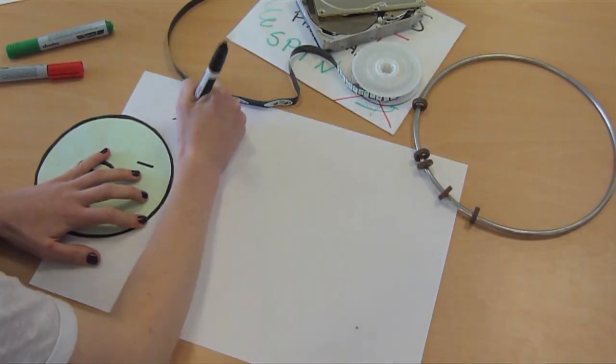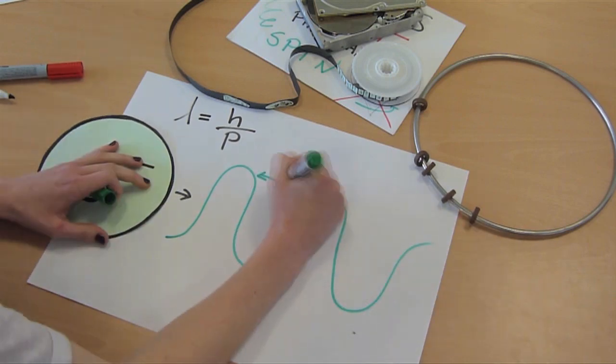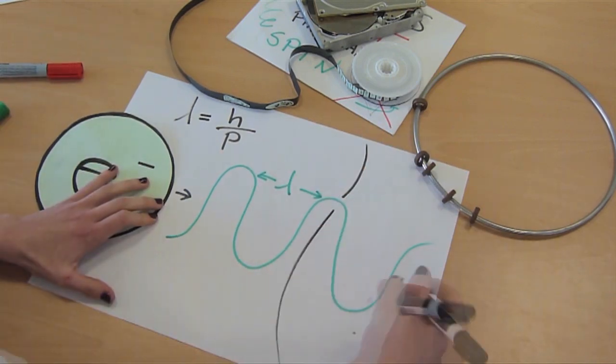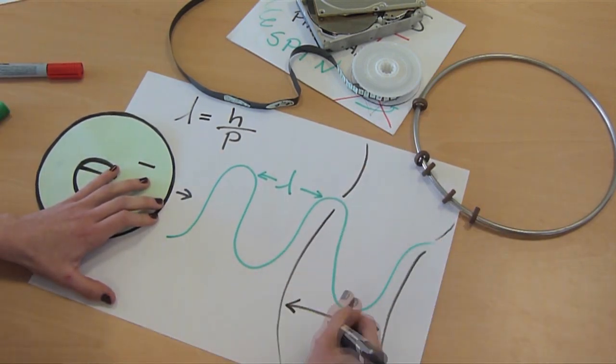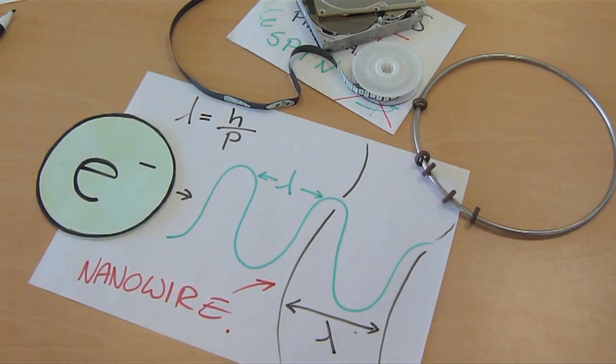A nanowire, in that sense, is defined relative to the wavelength of the charges or the electrons that can travel across it. That's the sort of nanowires which we are particularly interested in. They're conducting nanowires.